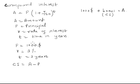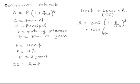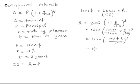Substituting the values of P, r, and t in the formula: A equals 1000 times 1 plus 3 over 100 raised to 3. Since we cannot add directly without a common denominator, this becomes 1000 times 100 plus 3 over 100 raised to 3, which equals 1000 times 103 over 100 raised to 3.